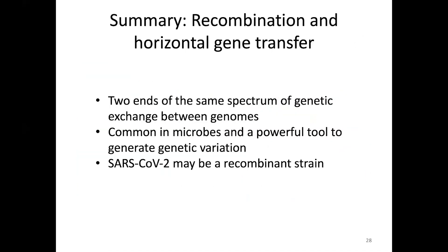To summarize the first section on recombination and horizontal gene transfer: they are processes at two ends of the same spectrum of genetic exchange between genomes. They are common in microbes and a powerful tool to generate genetic variation. And it appears that SARS-CoV-2 may be a recombinant strain. I'm going to take a second to look at chats — I'll answer questions at the end of the lecture like last time.